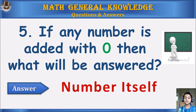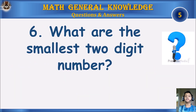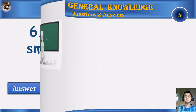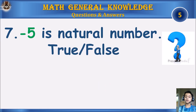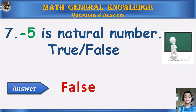Answer: The number itself. What is the smallest two digit number? Your time starts. Answer: 10. Minus 5 — is it a natural number? True or false? Your time starts.